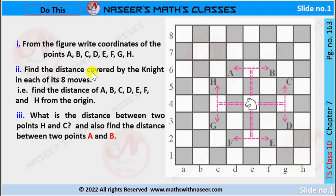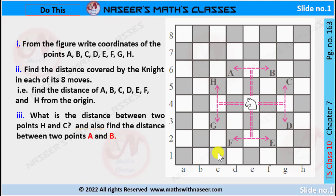The second part is to find the distance covered by the knight in each of its 8 moves — that is, find the distance of A, B, C, D, E, F, G, H from the origin. The third part is to find the distance between two points H and C, and also find the distance between two points A and B. Here a chessboard is given and a horse (knight) is placed and moves in 8 directions. We have to find the coordinates of the knight in 8 directions, and then find the distance between H and C and also the distance between A and B.